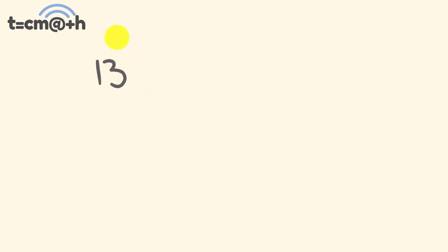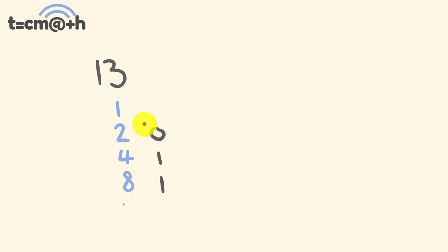Now you have a go — convert 13 to binary. Start by doubling: 1, 2, 4, 8 — double of 8 is 16, so we don't go further. What numbers add to 13? 8 plus 4 is 12; we can't use the 2 because that gives 14, so we put a zero there; 8 plus 4 plus 1 equals 13. Reading from the bottom: 1, 1, 0, 1 — so 13 in binary is 1101.